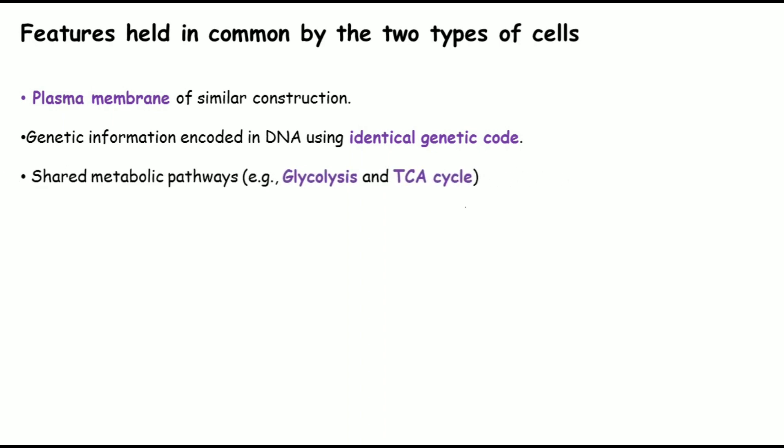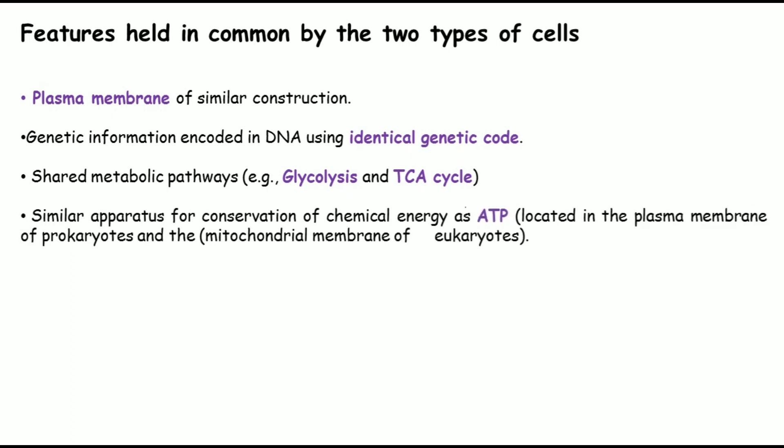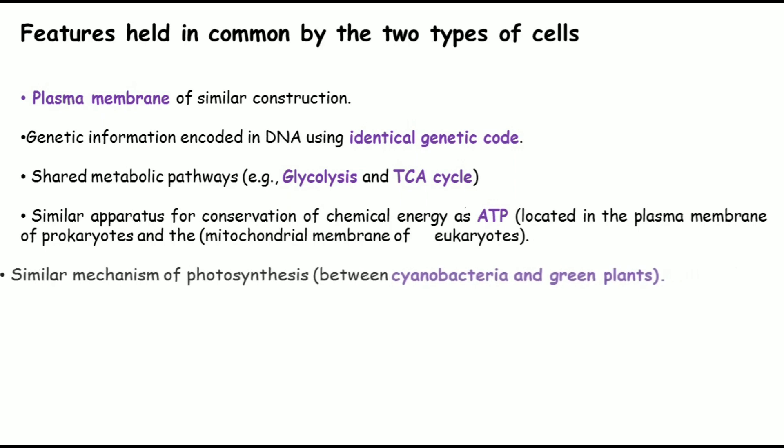Both cell types share metabolic pathways such as glycolysis and the TCA cycle, which are basic metabolic pathways present in all living cells. ATP is the chemical energy used for different purposes in both cell types. In prokaryotes, ATP production occurs at the plasma membrane, whereas in eukaryotes it occurs at the mitochondrial membrane.